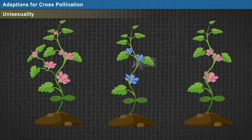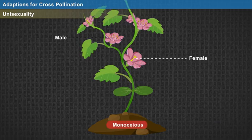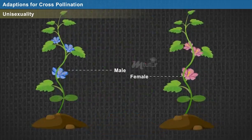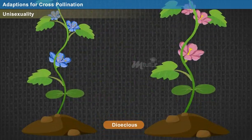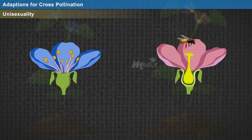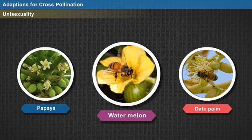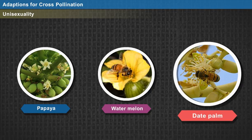Unisexuality is a condition wherein the male flower and the female flower may be present in the same plant (monoecious) or in different plants (dioecious). Cross-pollination occurs easily in dioecious plants. Examples of unisexuality are papaya, watermelon, and date palm.